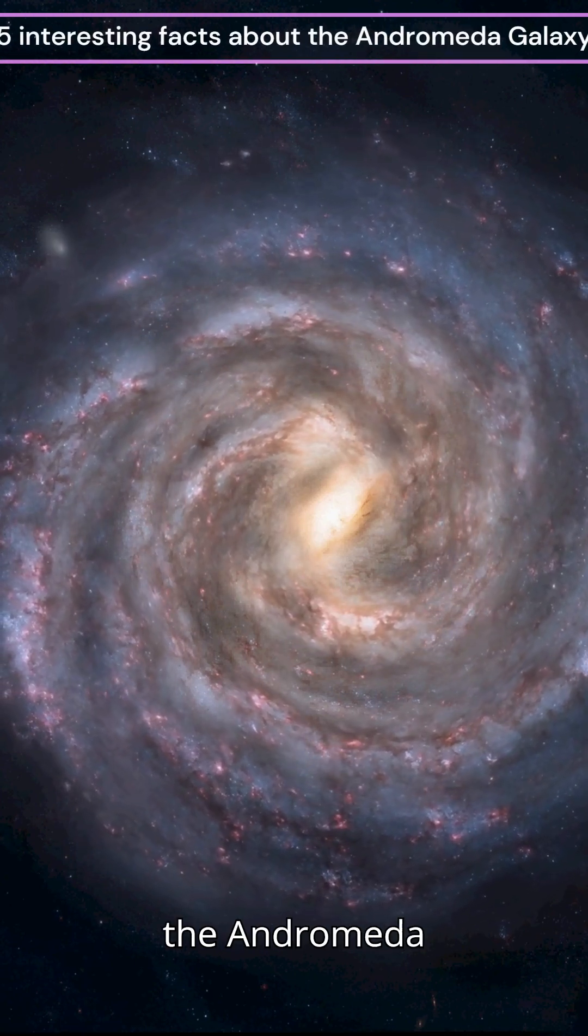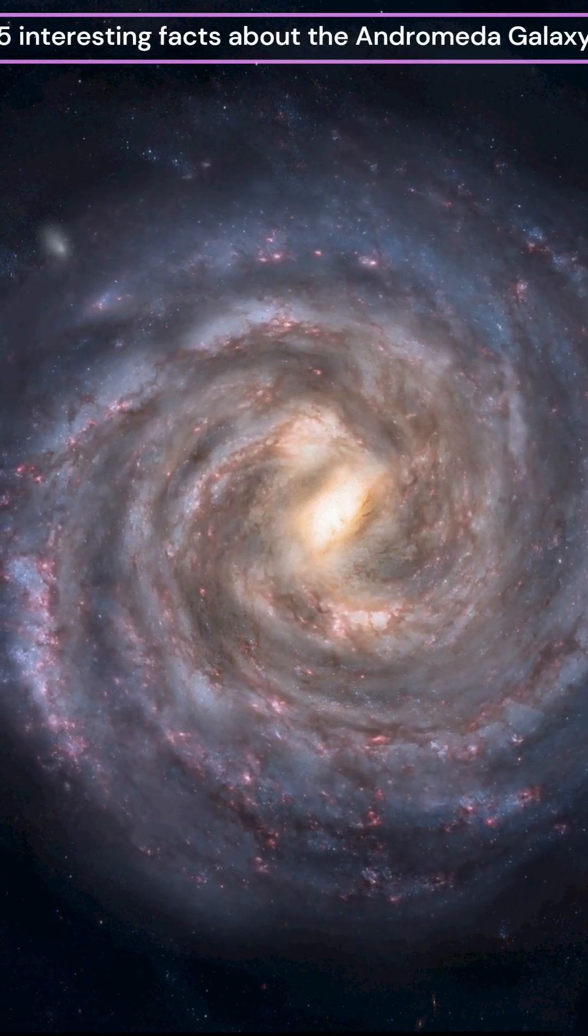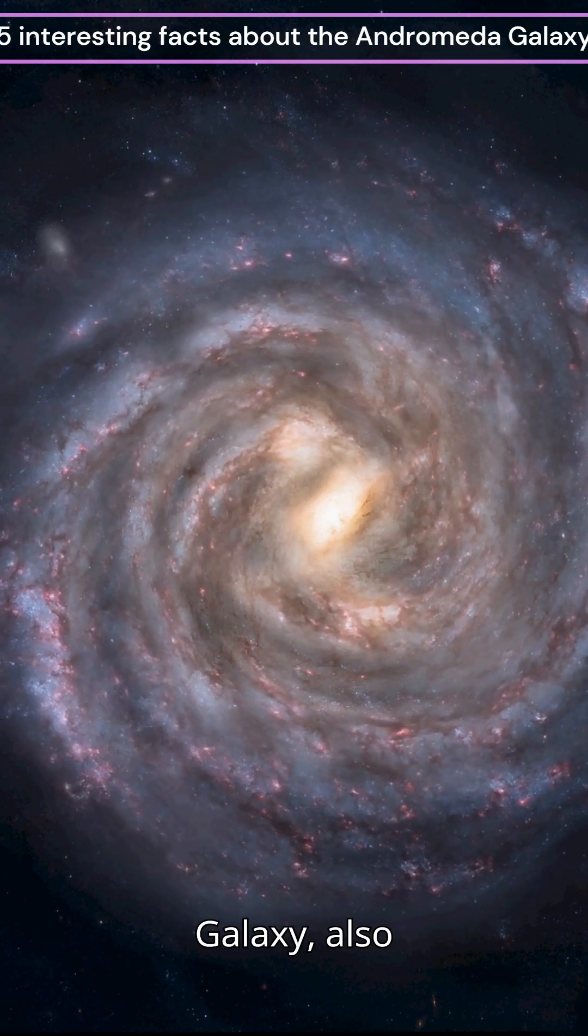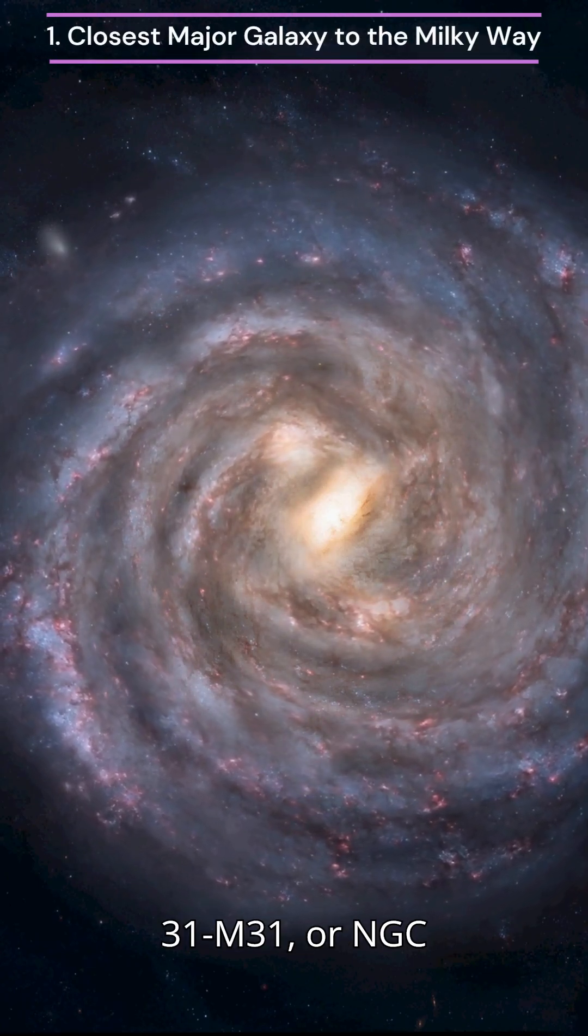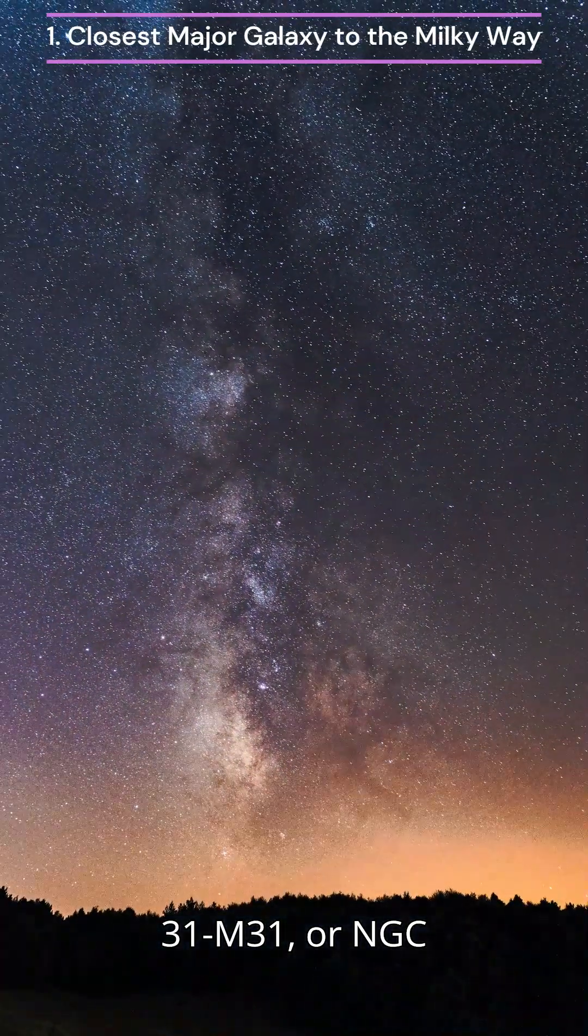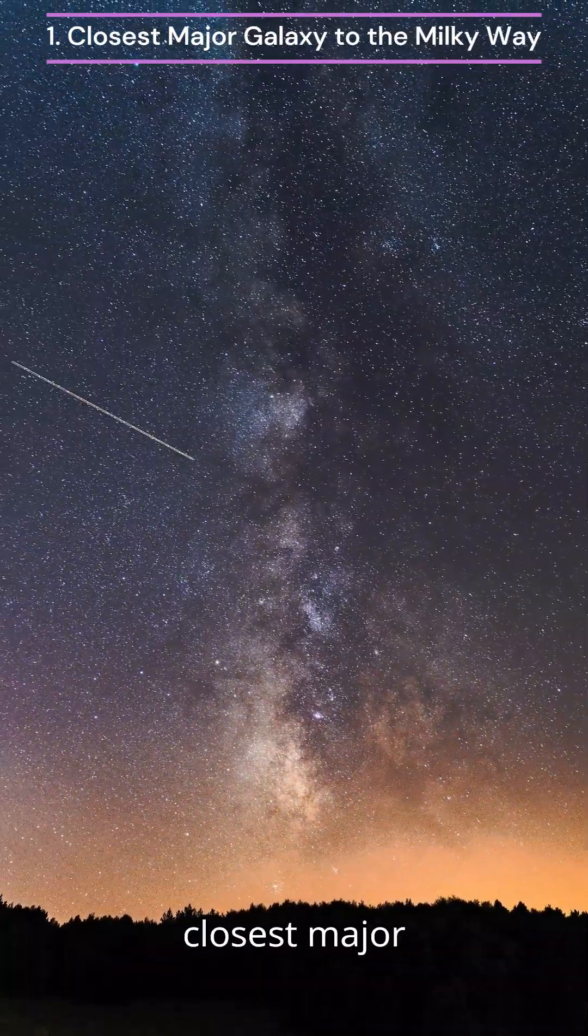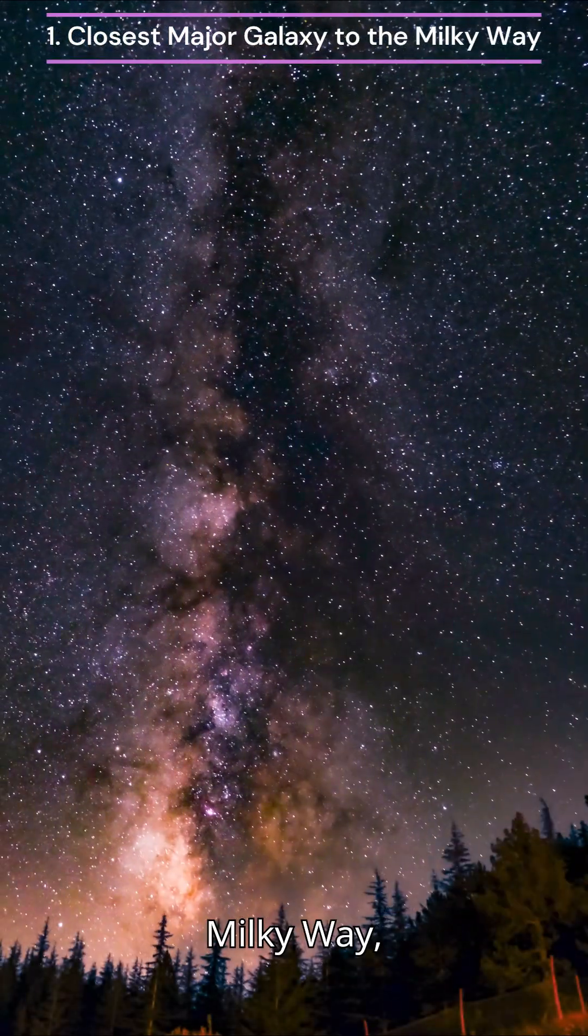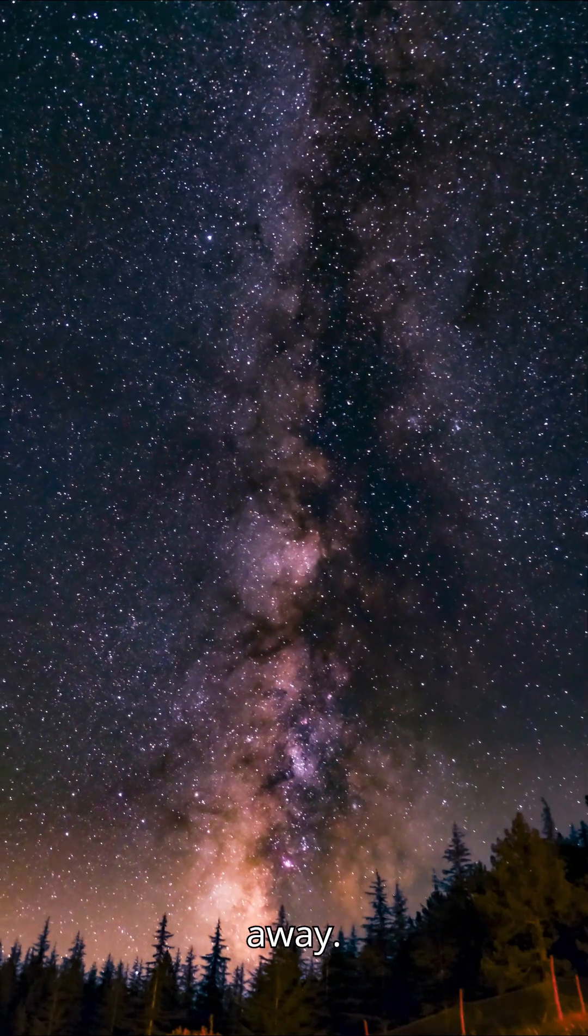5 Interesting Facts About the Andromeda Galaxy. The Andromeda Galaxy, also known as Messier 31, M31, or NGC 224, is the closest major galaxy to the Milky Way, approximately 2.5 million light-years away.